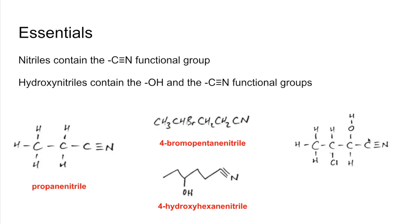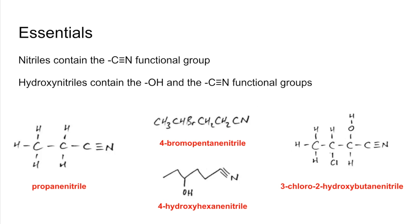The last one has one, two, three, four carbons. There's a chlorine on carbon number three and a hydroxy group on carbon number two. We apply the alphabet rule, so chlorine comes first in the name even though it's on a higher-numbered carbon. This is called 3-chloro-2-hydroxybutanenitrile.